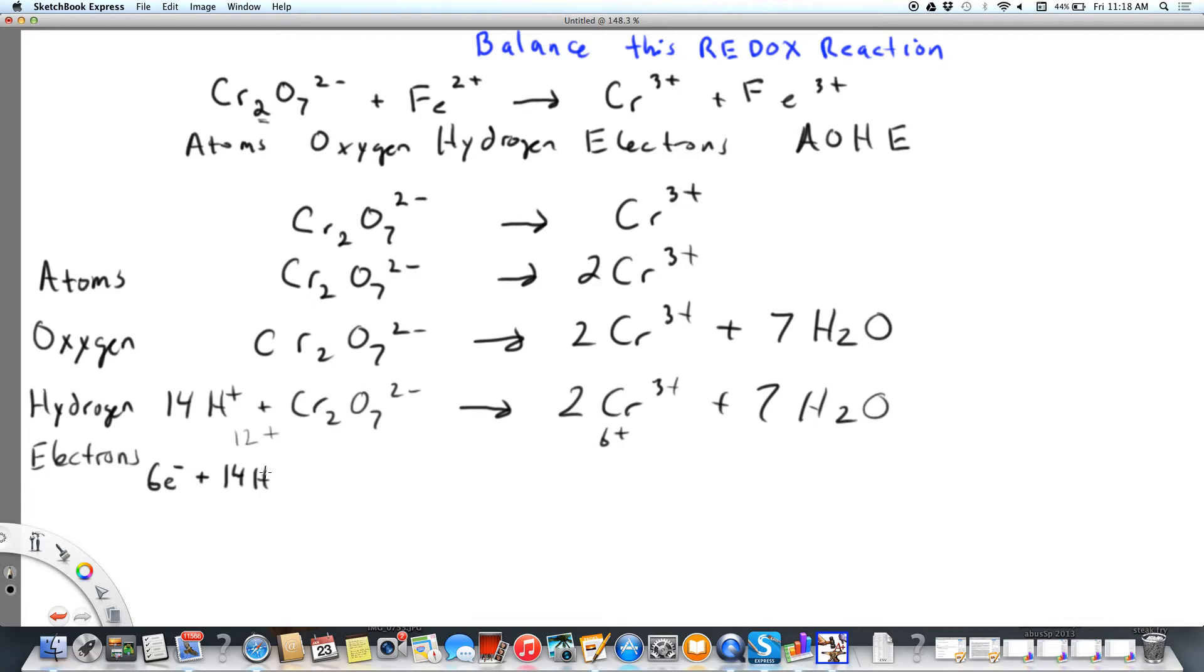You might wonder, how do we add electrons? Is there a bottle of electrons somewhere? The answer is no. So then you wonder, where are those electrons coming from? Well, we've now only done half the reaction, right? Because the electrons are going to come from up here with the iron.